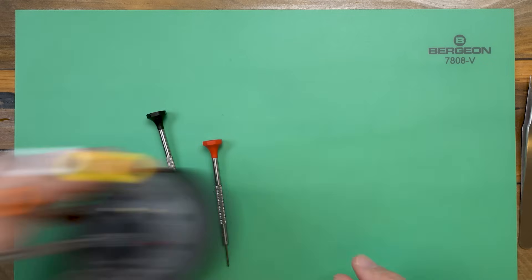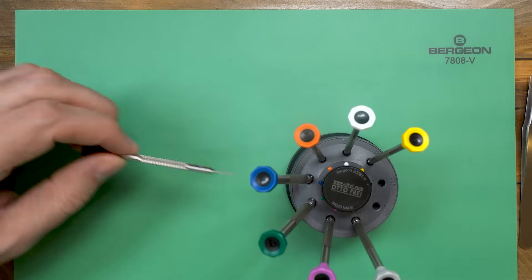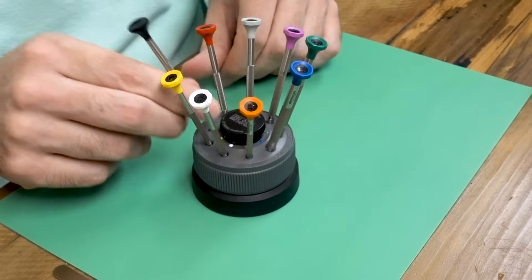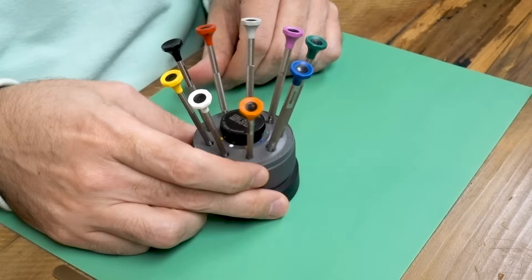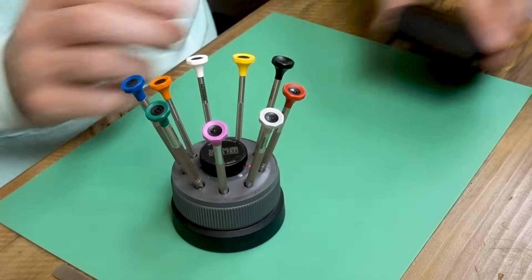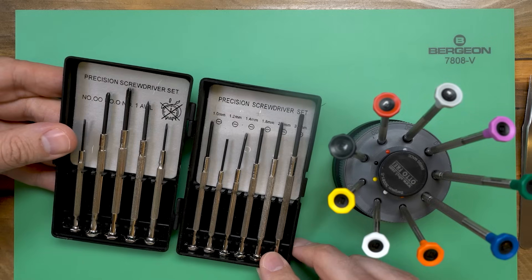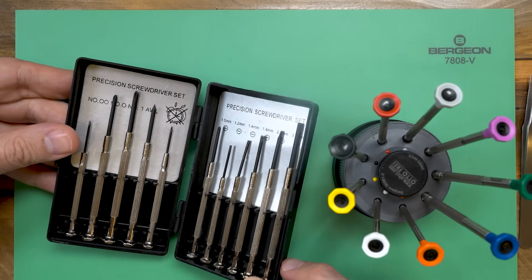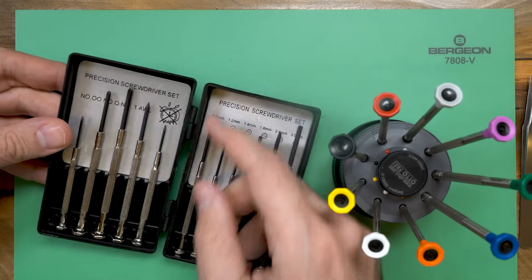A set of screwdrivers contains screwdrivers with sizes ranging from about half a millimeter up to two and a half millimeters. The generic versions will be of very low quality and they will cost about five dollars. If you just want to try things out, they will do in the short term.